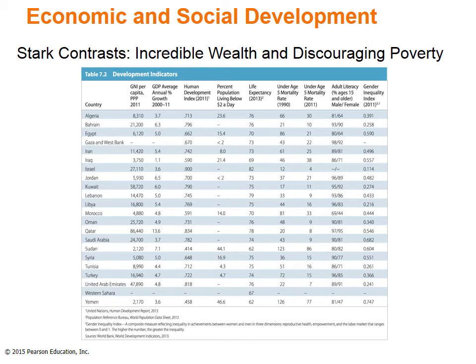This region is comprised of incredible wealth as well as discouraging poverty. Some countries enjoy prosperity due mainly to rich reserves of petroleum and natural gas, but other nations are among the world's least developed. Continuing political instability contributes to the region's struggling economy. Please pause and study the anomalies in the chart — note Qatar versus Sudan and Iraq under GNI, the Human Development Index of Israel and Yemen, Sudan's staggering poverty rate and infant mortality, and the Gender Equity Index, which is well below that of any other region in the world.